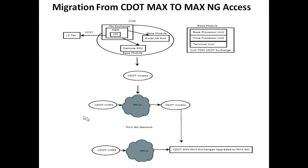The CDOT MAXengi core network handles all session establishment, call processing, and service delivery functions centrally. The core network consists of elements such as the C5 soft switch, C4 soft switch, session border controller, rating engine, signaling gateway server, and EMS server.